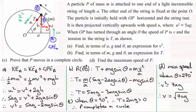So I hope that's given you some idea about how you go about tackling these problems when you've got a particle on a light inextensible string moving around in a vertical circle.